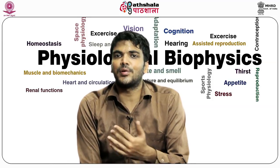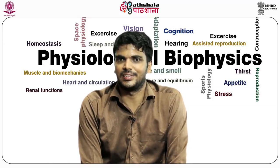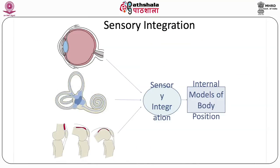Sensory integration allows construction of internal models and a frame of reference. We orient ourselves according to a particular frame of reference — most commonly the gravitational vertical. Proprioceptors in the abdomen are stimulated by the weight of the abdominal organs, and the saccule is stimulated by gravity acting on the endolymph, both helping to construct a frame of reference centered on the gravitational vertical.